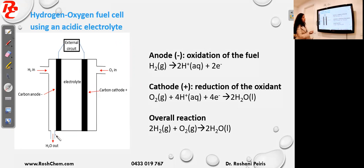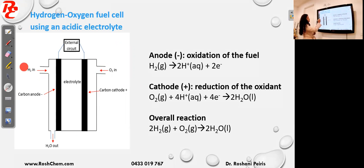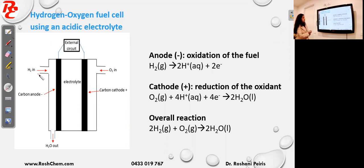When I say hydrogen-oxygen fuel cell, the fuel is hydrogen gas. You have hydrogen gas coming from one side and oxygen gas entering the fuel cell. In a fuel cell, the oxidation involves the fuel — in this case hydrogen gas — so the fuel will undergo oxidation. We know oxidation occurs at the anode.